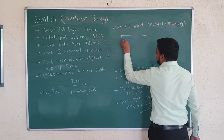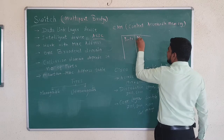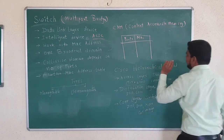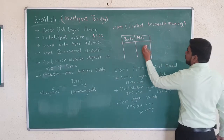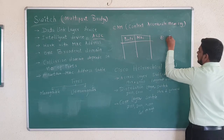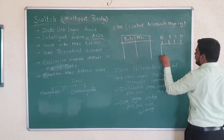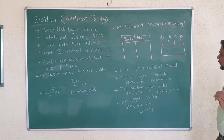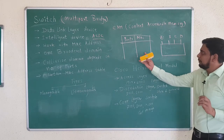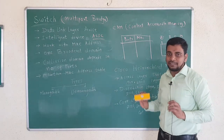In the CAM table, ports and MAC addresses are stored. Suppose port devices are connected with the switch. Initially, the CAM table will be empty — nothing is stored in it. It won't know which port has which MAC address until communication starts and the CAM table is populated.